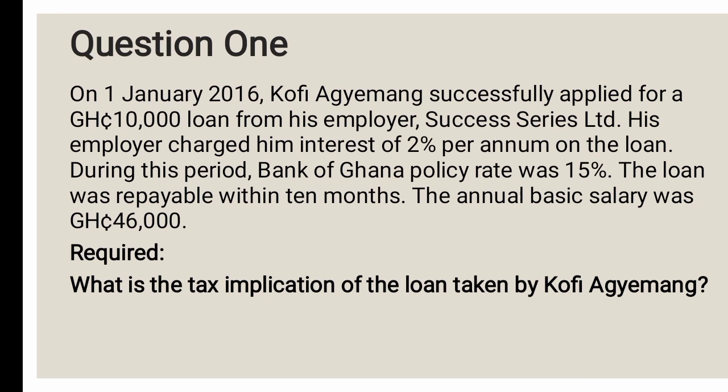Question one: On 1st January 2016, Kofi Ajeman successfully applied for a GHS 10,000 loan from his employer, Success Series Limited. His employer charged him interest of 2% per annum. The Bank of Ghana policy rate was 15%. The loan was repayable within 10 months. The annual basic salary was GHS 46,000. What is the tax implication?